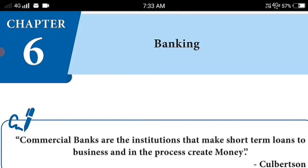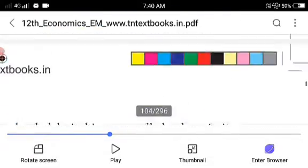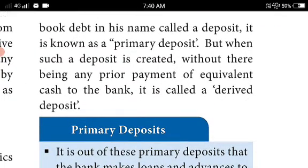Today we have to concentrate on the remaining concepts of this chapter. The next topic is primary deposit, passive deposit, and derivative deposit. The modern bank creates deposits in two ways: primary deposit and derived deposit. When a customer gives cash to the bank and the bank creates a book entry in his name, that is called a primary deposit. But when such a deposit is created without any payment of equivalent cash to the bank, it is called a derived deposit.